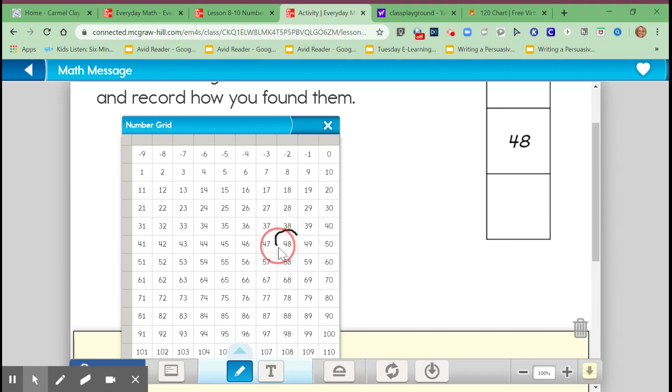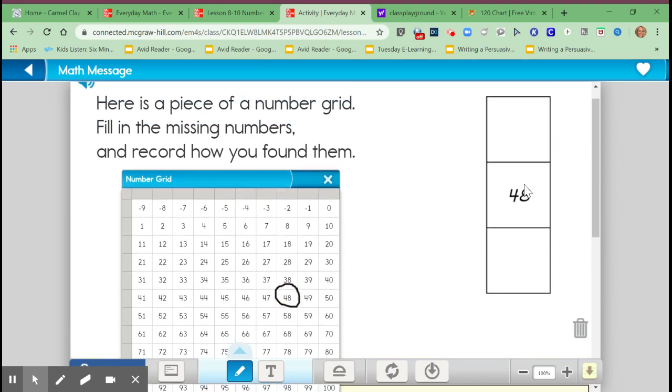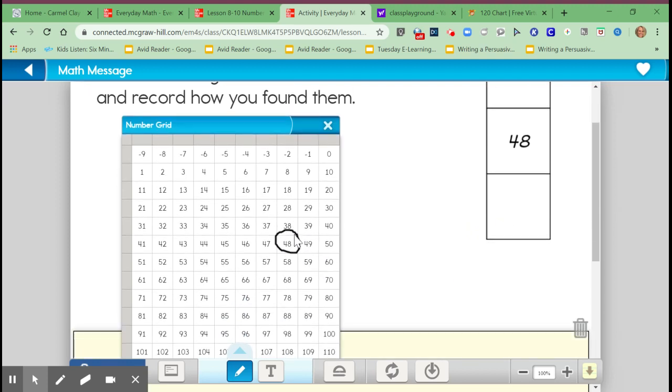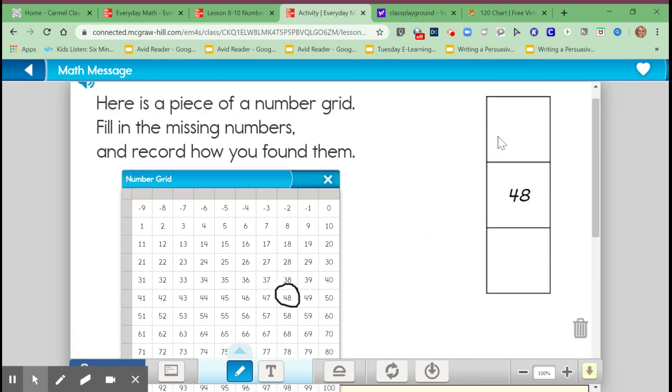you circle the 48, then your job is to look at what number is above the 48 here on the chart, and what number is below the 48. So as I look here at my chart, I see that above the 48 is 38, and so that's what I would write right here. Let's write 38, and then below it is 58, and that's what I would write here.